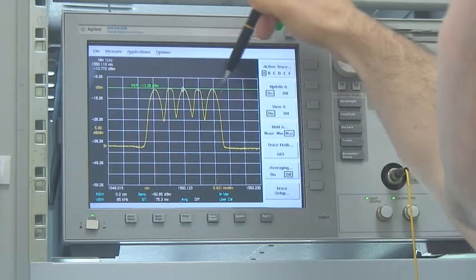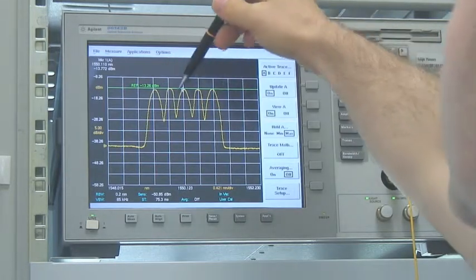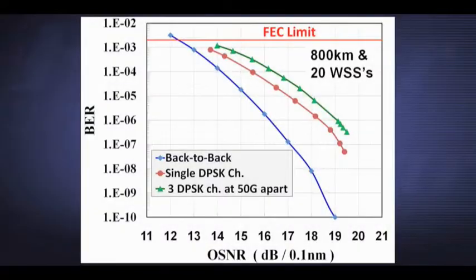These are the 40G DPSK channels and these are the 10G channels. In this case, the system penalty due to three adjacent DPSK channels is 1 dB.